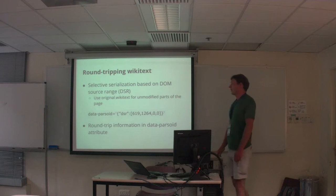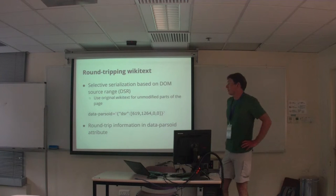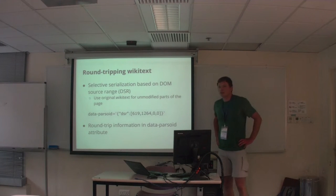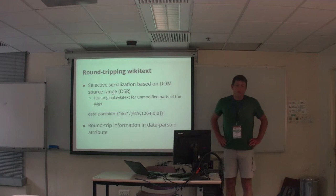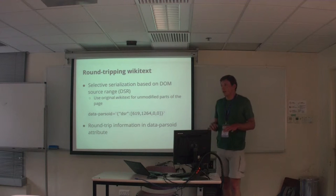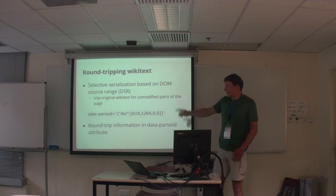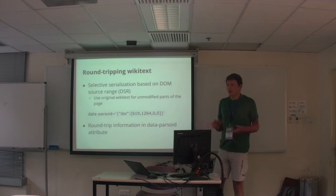For the way back, we have information called DSR — DOM Source Range — which is very important. For each sub-tree in the DOM, we have the start and end offset, and the start tag and end tag width. Based on that, we can do a DOM diff of the original HTML and the modified HTML we get back, then use the original wiki-text based on DSR for bits that were not modified. That avoids creating small diffs on things like code style, whether quotes are single or double, or purely syntactic whitespace diffs.